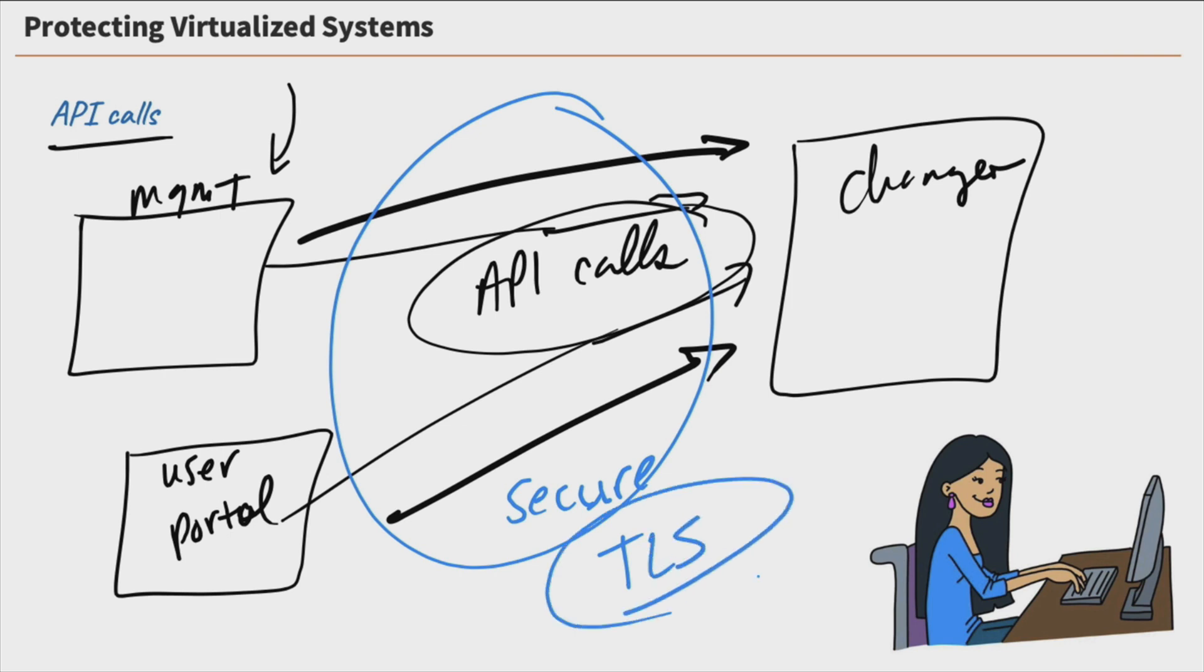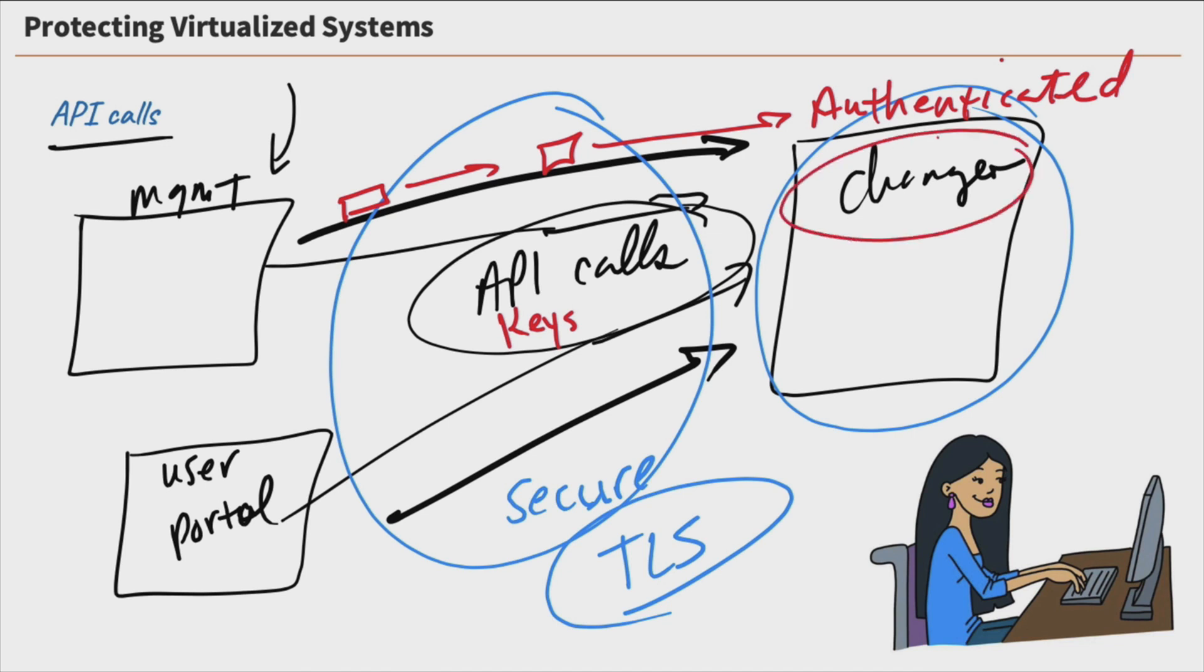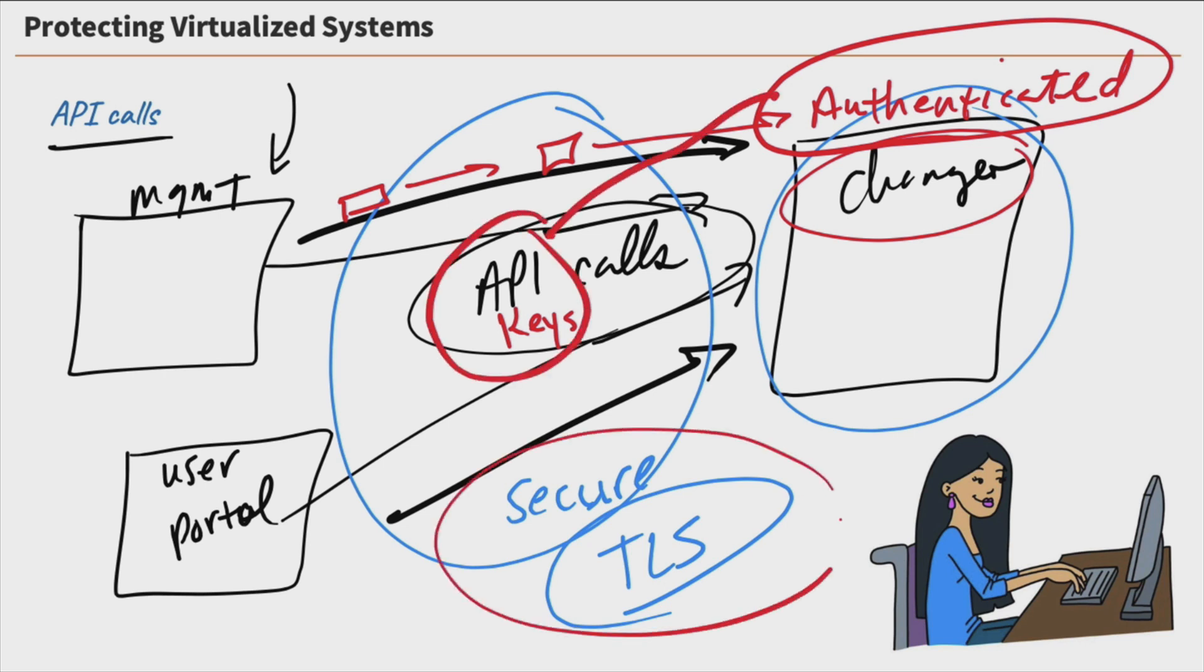We need to ensure that these communications here are secure communications, looking at encryption protocols like TLS to ensure that we have secure communications to these systems when making changes. API calls use something called keys, API keys. These keys are sent along with the request, and that key is how these requests are authenticated. It's kind of like a password, saying this is my key, validate me, authenticate me, make sure I have the authorized permissions to make these changes.